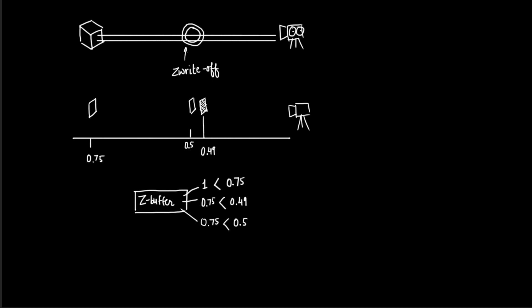Now the turn comes for the pixel of the sphere, which is at 0.5 distance. That is less than 0.75, so the Z-test will pass, the fragment shader will be executed, and we will see the color of the sphere. That's how the outline will exist between the cube and the sphere.